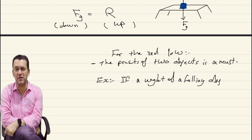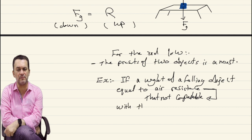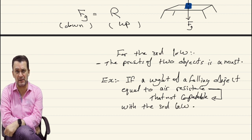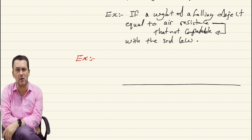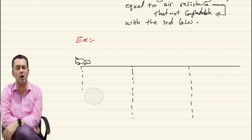Here is one example to show how we deal with the three laws in case of motion. I have one route with three stages for the motion of a car. In the first stage, the car was at rest at the beginning; by the end of the stage the speed upgraded to 2 m/s, and that was after four seconds. In stage two, the velocity remains constant at 2 m/s for four seconds. In the last stage, the speed decreased back to zero in four seconds.